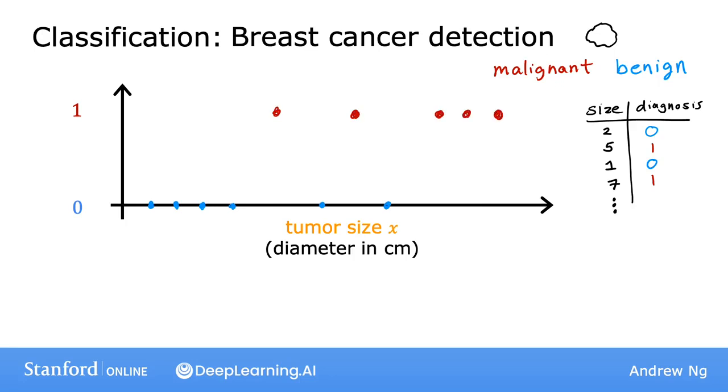One reason that this is different from regression is that we're trying to predict only a small number of possible outputs or categories. In this case, two possible outputs, 0 or 1, benign or malignant. This is different from regression, which tries to predict any number out of infinitely many possible numbers. And so the fact that there are only two possible outputs is what makes this classification.